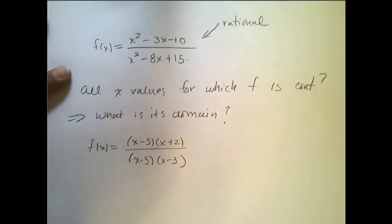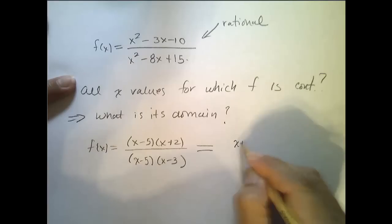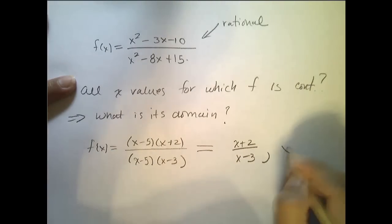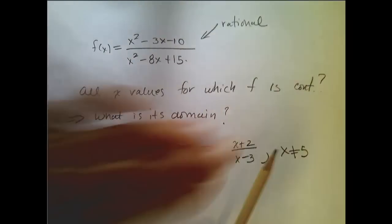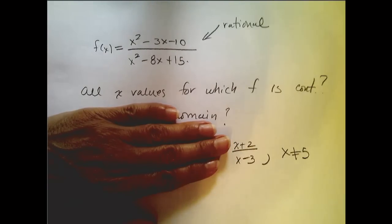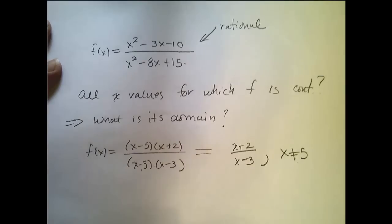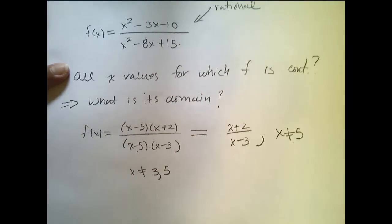Now, what is tempting and wrong is to say that this function is actually equal to x plus 2 over x minus 3. This is not true. It's only equal to this when x is not 5. So if I make the mistake to equate these functions and then answer the continuity question, I might then say, oh, the only place where this function is not continuous is at 3. And you would be wrong. Because it is also not continuous at 5. So x cannot be 3 or 5.